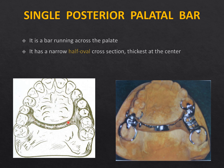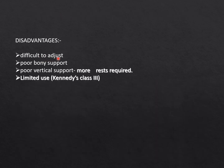The single palatal bar is the simplest major connector design — a simple bar running across the palate at a right angle to the mid-palatal raphae, lying in the posterior part of the hard palate. In cross-section it is a half-oval shape: flat underneath with a gently sloping superior surface toward the edges. It is not the most favorable major connector and is mainly used in tooth-supported situations like Kennedy's Class 3. Disadvantages include difficulty of adjustment, poor bony support due to small surface area coverage, poor vertical support requiring more rests on adjacent abutment teeth.